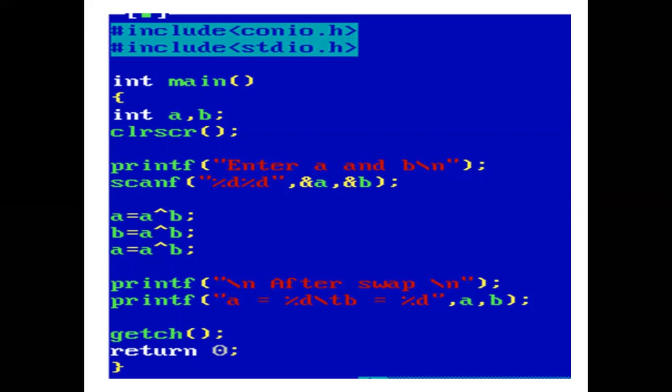Now, with the help of program, we will implement the concept. In the main function, we have declared two variables of type int A and B.